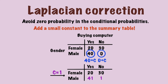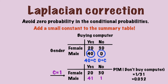Suppose c is equal to 1, the summary table becomes like this, and there are no zero counts anymore. The probability of male conditioned on don't buy computer is now 1 over 31, which is 0.032. Although this number is still super close to zero, we successfully avoid the zero probability. After all, there should not be zero probability in real life.